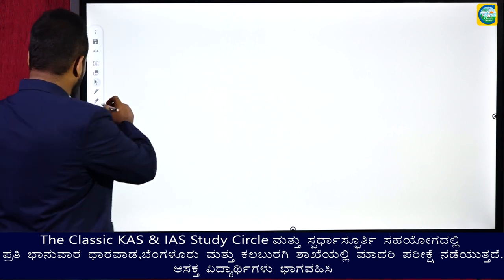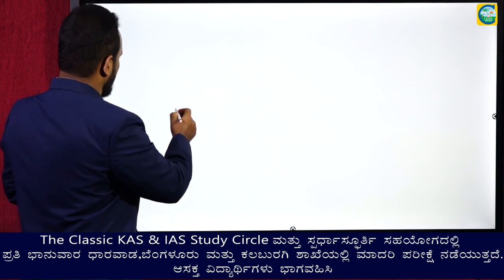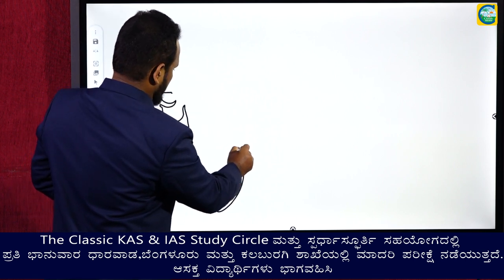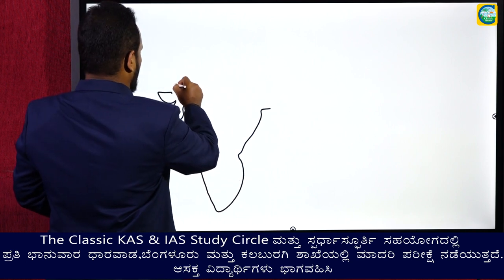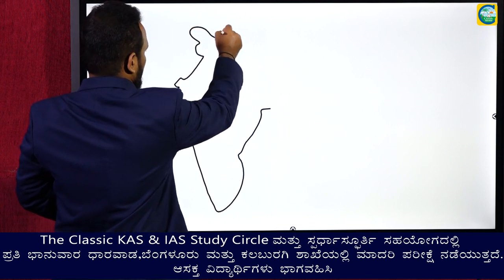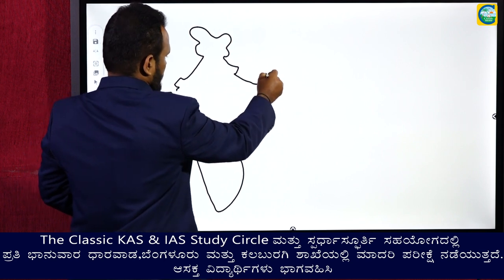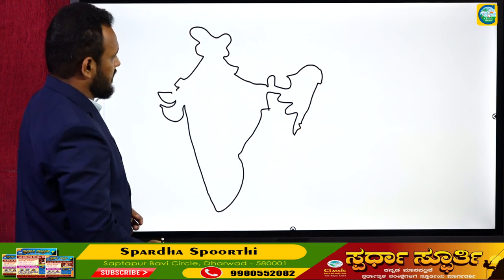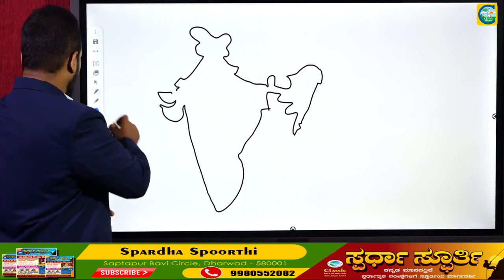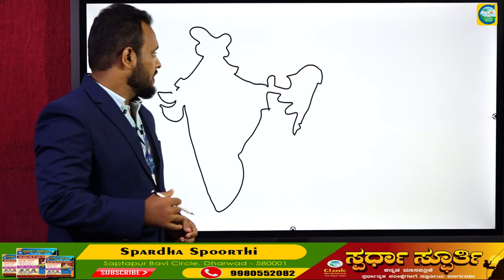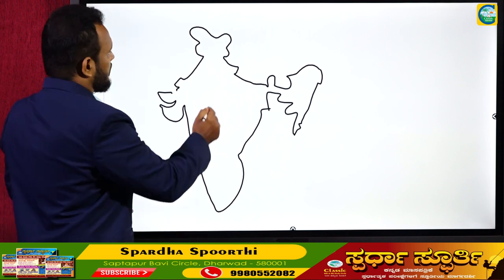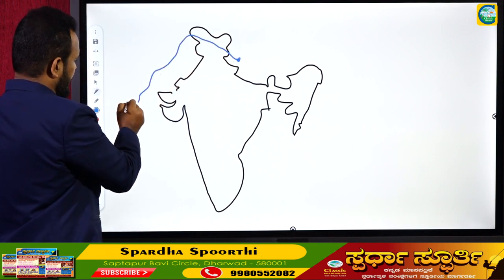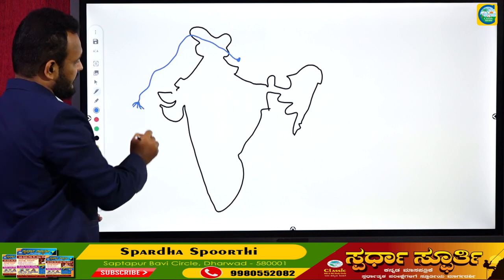I want to draw a map of India. This is our India map. From here we get a river called the Indus river, which flows in Pakistan and drains itself into the Arabian Sea. After that, we have a river here which flows eastward in the beginning in Tibet, then enters India at Arunachal Pradesh, moves towards the southern side, enters Bangladesh, and drains itself into the Bay of Bengal, making a delta called the Sundarban Delta.